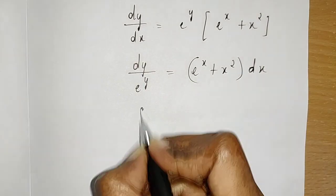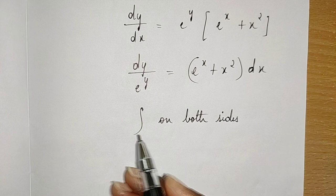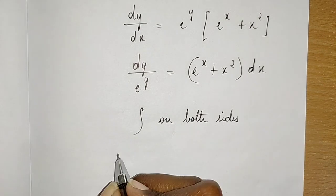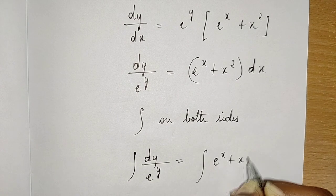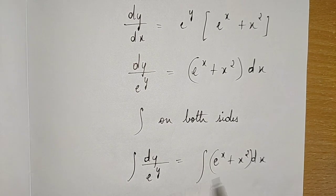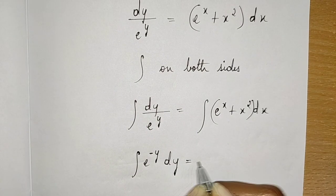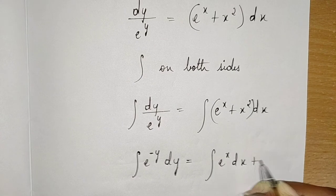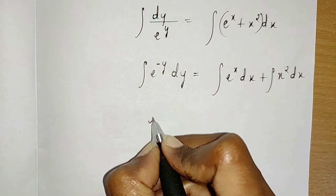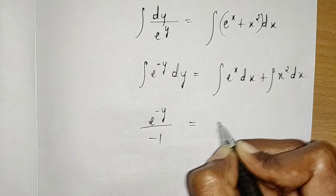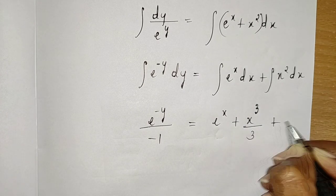Integrating both sides: ∫e^(−y) dy = ∫e^x dx + ∫x² dx. This gives: e^(−y)/(−1) = e^x + x³/3 + c.